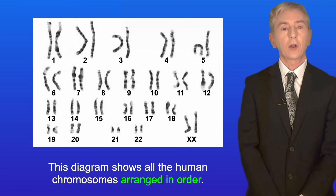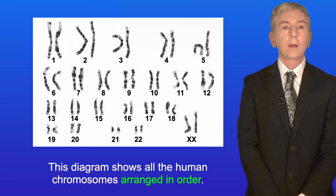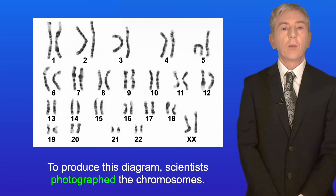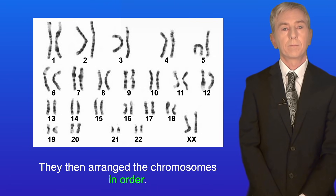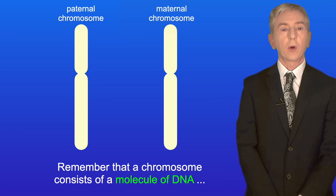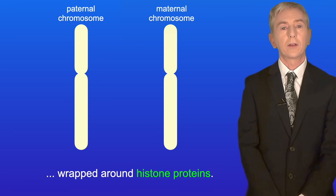This diagram shows all the human chromosomes arranged in order. To produce this diagram scientists photographed the chromosomes and then arranged them in order. Remember that a chromosome consists of a molecule of DNA wrapped around histone proteins.